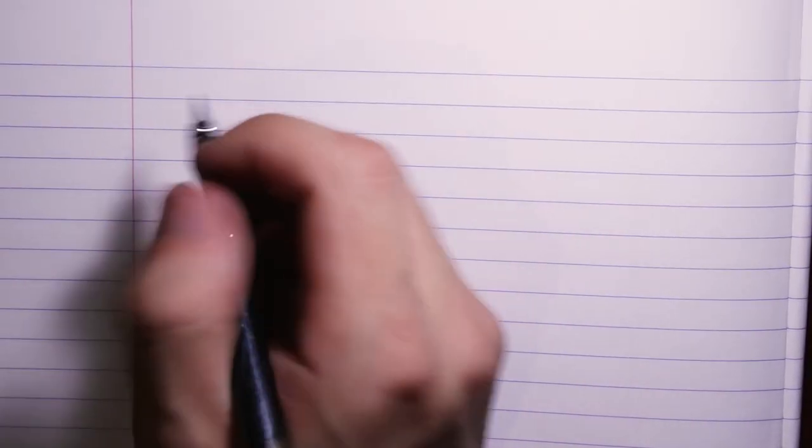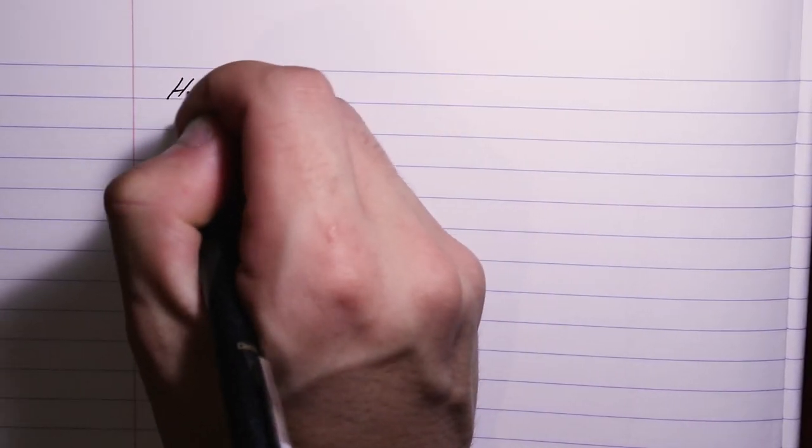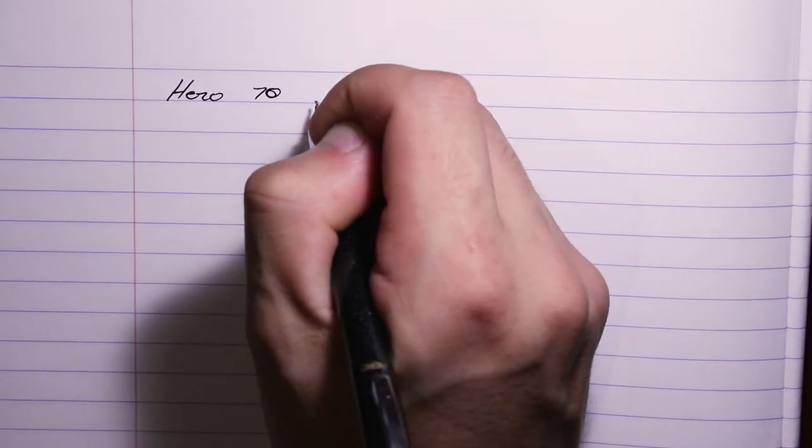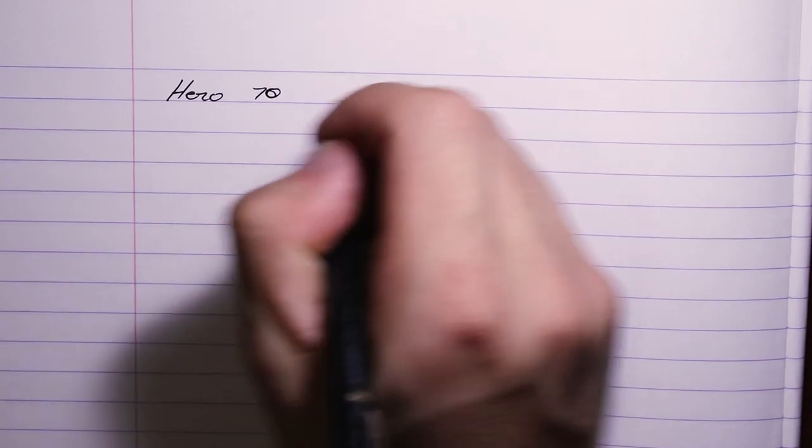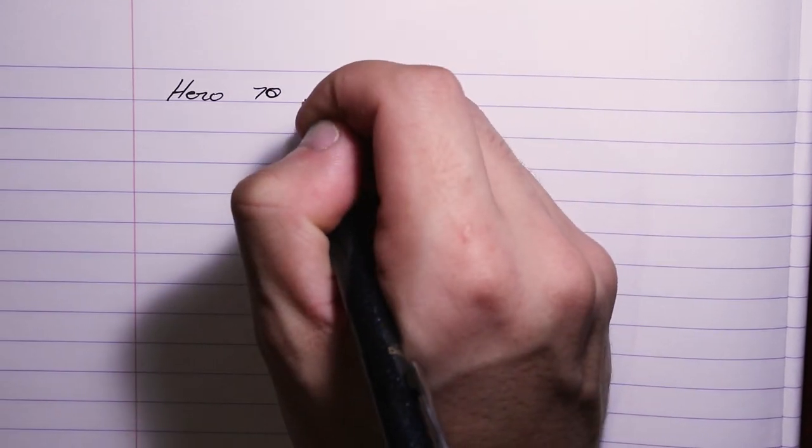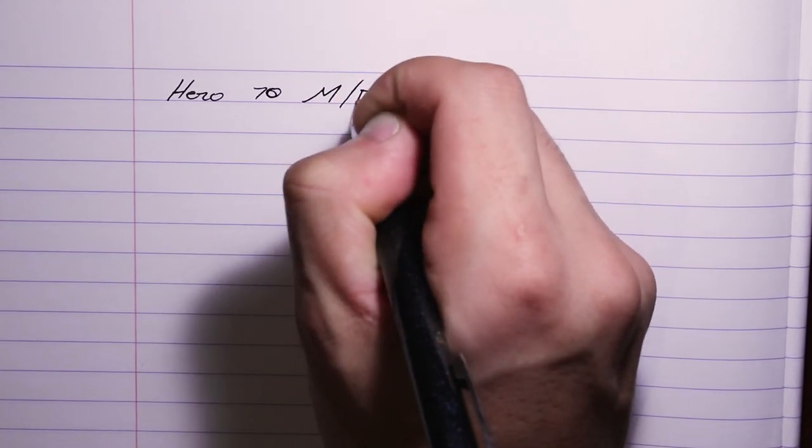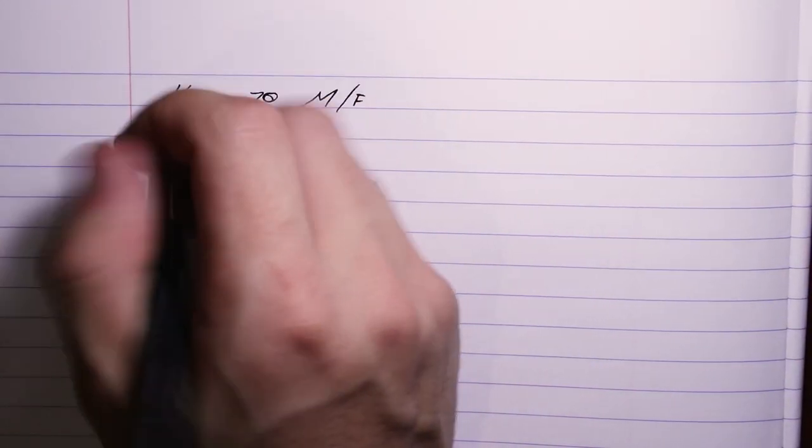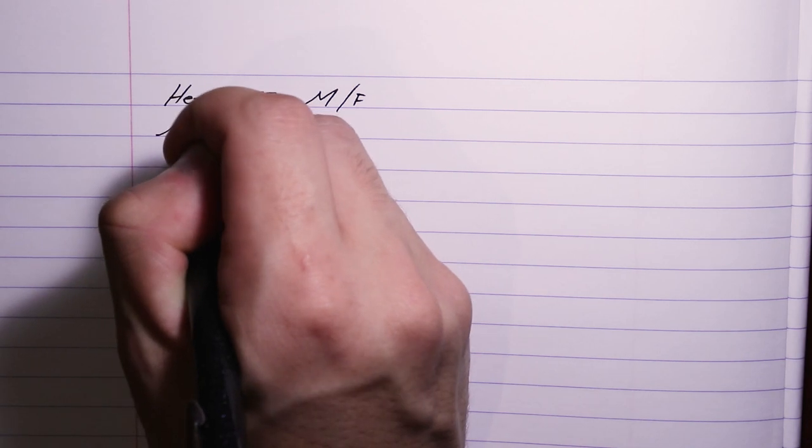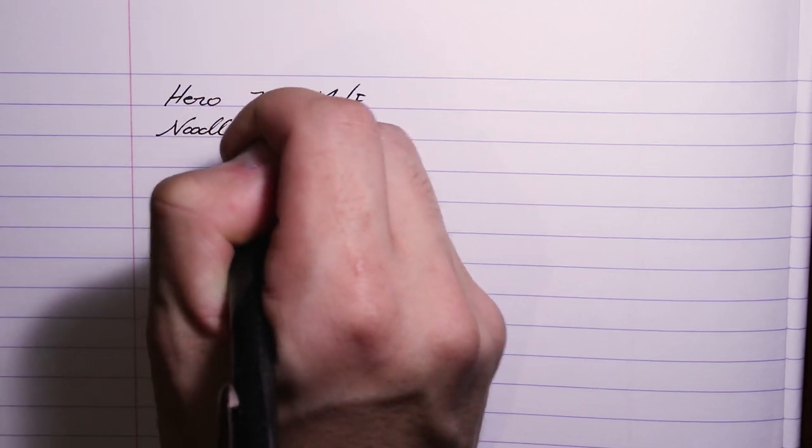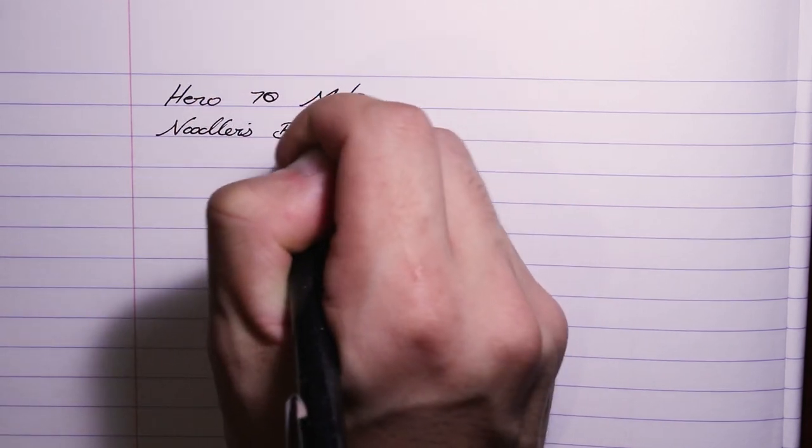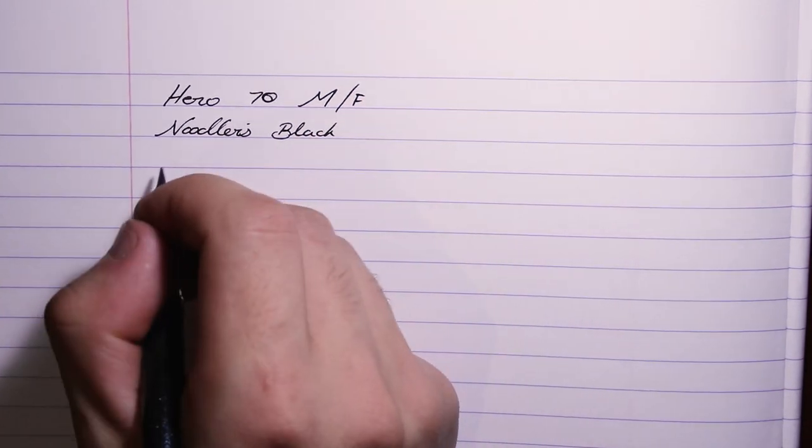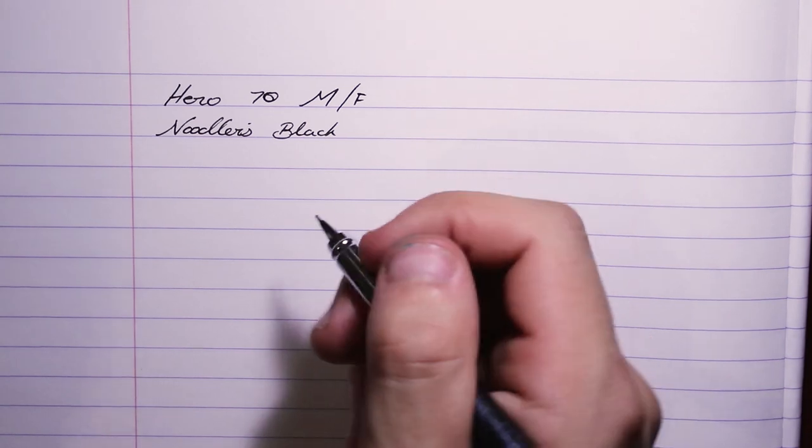Welcome to the writing sample for the Hero 70. This fountain pen has—I'm not exactly sure if this is a medium or a fine nib, so I'll just do medium slash fine. The ink that I'm using is Noodler's Black, and of course the paper like always is Clairefontaine. Let's get a very quick writing sample.